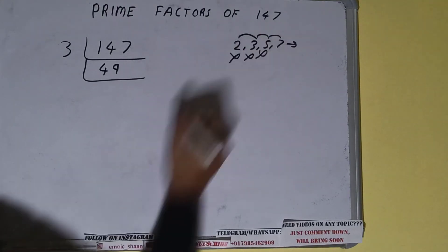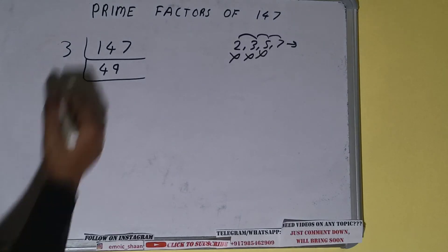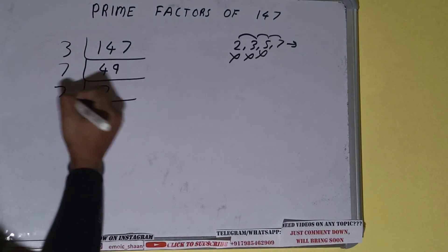we'll be going to the next lowest one, that is 7. If we check with 7, it is divisible because 7 times 7 is 49. So divide it, and we'll be having 7. 7 is again divisible by